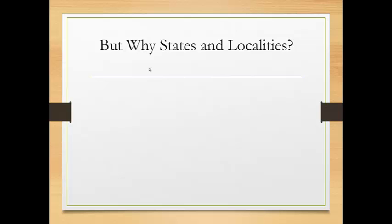But why, if the federal government is supposed to regulate immigration, are states and localities actually doing it? The answer is that the federal government is often viewed as incompetent. Even though Congress has talked about comprehensive immigration reform, it hasn't happened in the last decade or even almost two and a half decades — not since the 1990s. The cities and states are tired of waiting for the federal government to do something when they're the ones being affected.